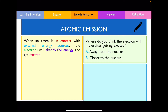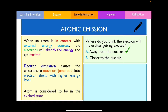Let's have a think about where the electrons will actually move to after they've been excited. Do you think they will move away from the nucleus, or do you think they'll move closer to the nucleus? The correct answer is that the electrons will move further away from the nucleus. The reason is that electron shells found closer to the nucleus have low energy, whereas electron shells found further away from the nucleus have higher energy. So once an electron has absorbed the energy from the fire source or high energy radiation, it is now excited and will jump out into an electron shell with high energy. We now consider the atom to be in the excited state because the electrons are at a higher energy level.